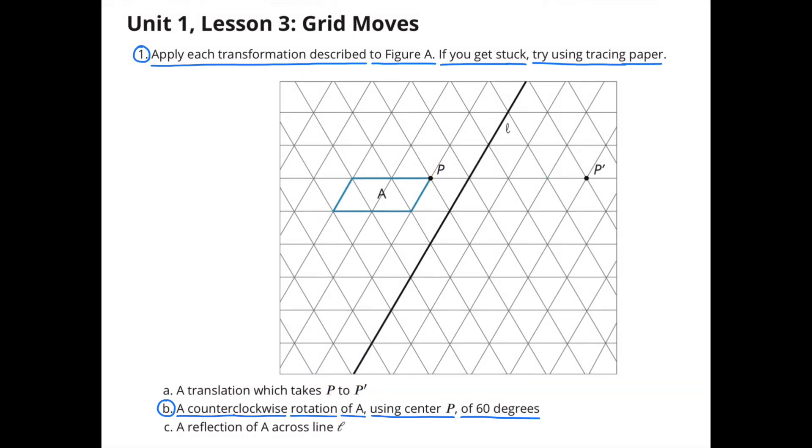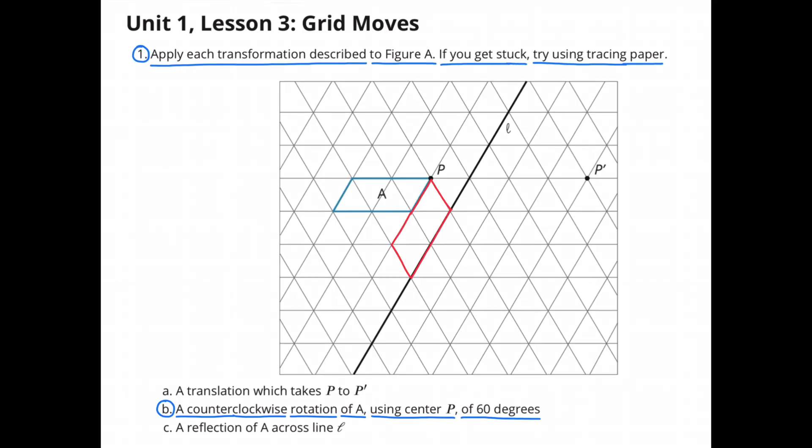B. A counter-clockwise rotation of A using center P of 60 degrees. This is the new location for figure A after a counter-clockwise rotation of 60 degrees.